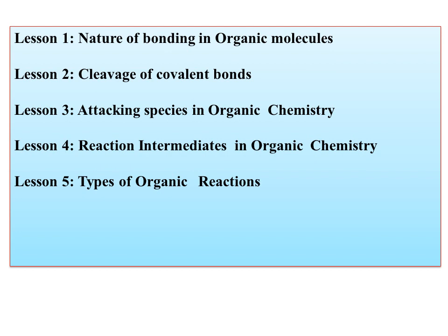In lesson number five, we are going to cover the different types of organic reactions. The above four lessons will tell you how the reaction takes place. Depending upon the attacking species, the intermediate, and the cleavage, you come across different organic reactions depending on the starting material and the reactant. Different types of reactions that take place in organic chemistry will be studied in detail in lesson number five.